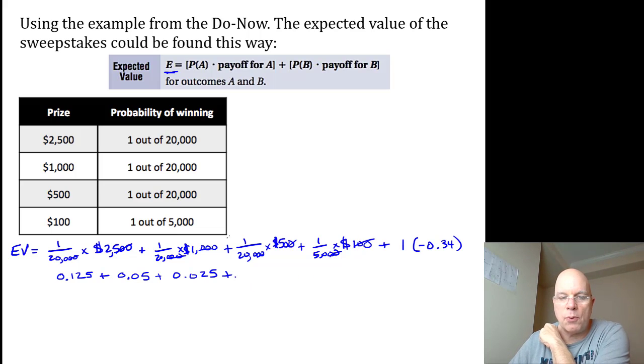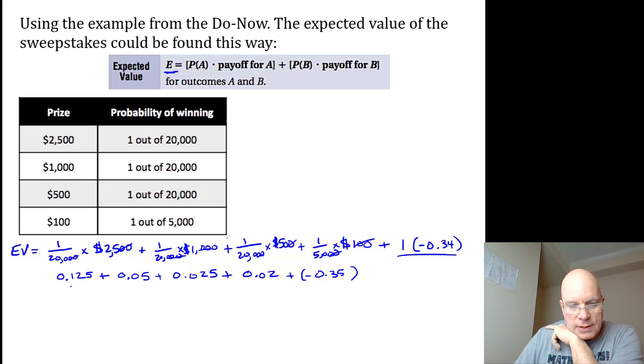And our final term is this negative term, I'm adding a negative 34 cents. Now let's talk about the meaning of each of these. This means if you send a postcard, your stake just based on this $2,500 prize is 12 and a half cents.